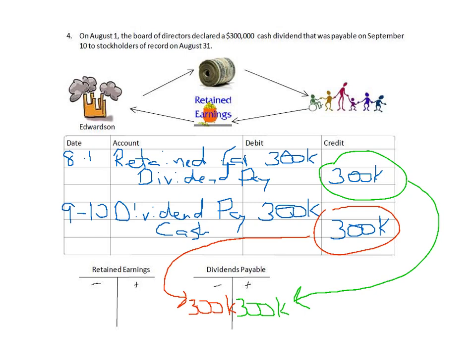For the last transaction — the cash dividend — we already declared and paid it. Looking at the T-accounts, the $300,000 increased dividends payable when declared, then was debited when we actually paid the dividend, netting to zero. There is no current liability remaining, so no adjusting journal entry is needed. That brings us to the end of this problem — I hope you found this video helpful, and if you have any questions, feel free to stop by.